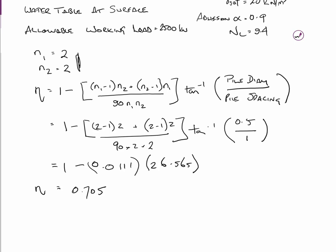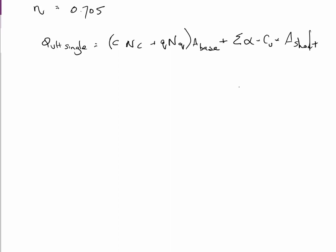Which just means that 4 group piles are only about 70% as efficient as 4 individual piles. Alright, so now we'll go through and calculate the ultimate bearing capacity of a single pile in this group.